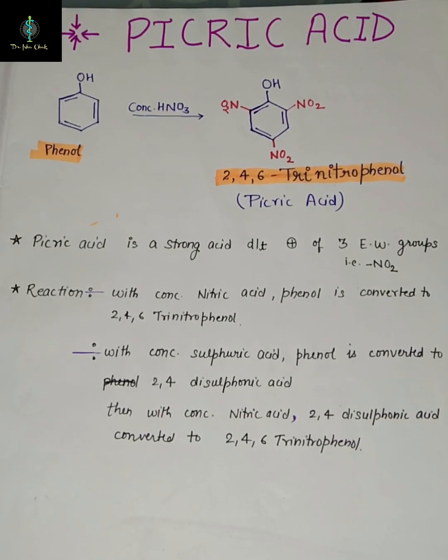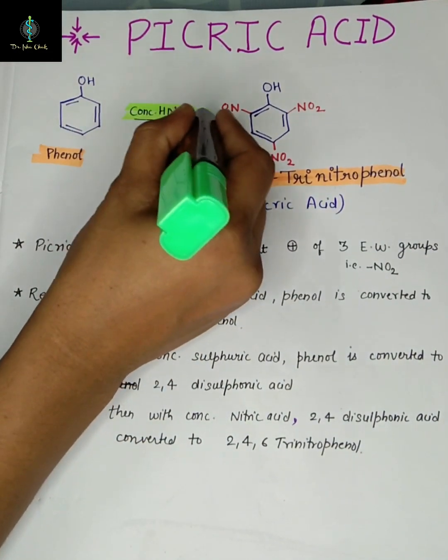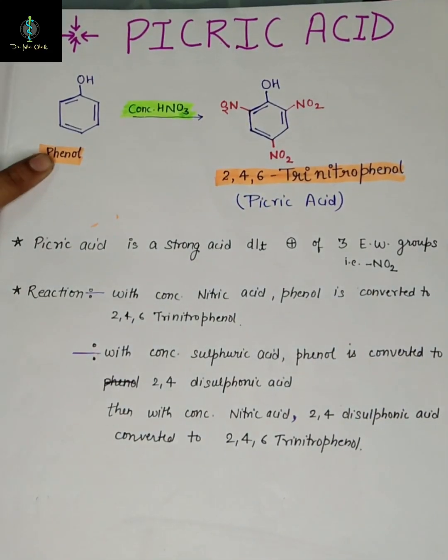Hello students, welcome to my channel. This is Dr. Isha Chak. Today I'm going to teach you about picric acid. With concentrated nitric acid, phenol gets converted to 2,4,6-trinitrophenol.